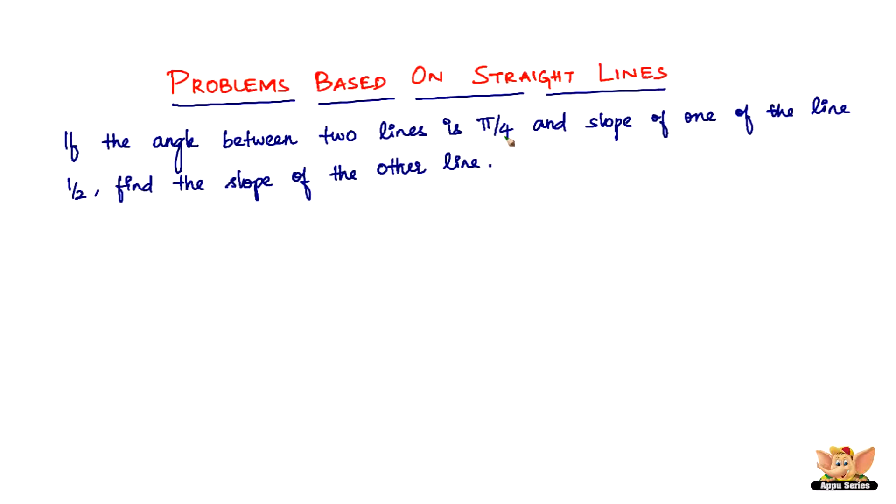180 degrees by 4 is 45 degrees, and slope of one of the lines is 1 by 2. Find the slope of the other line.